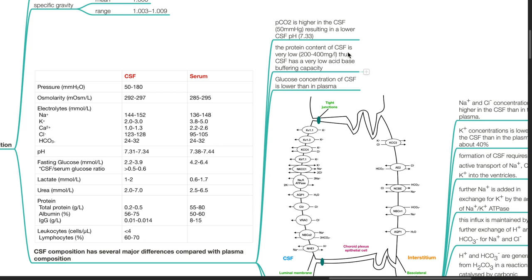The protein content of CSF is very low, 200 to 400 mg per liter. Thus, CSF has a very low acid-base buffering capacity.